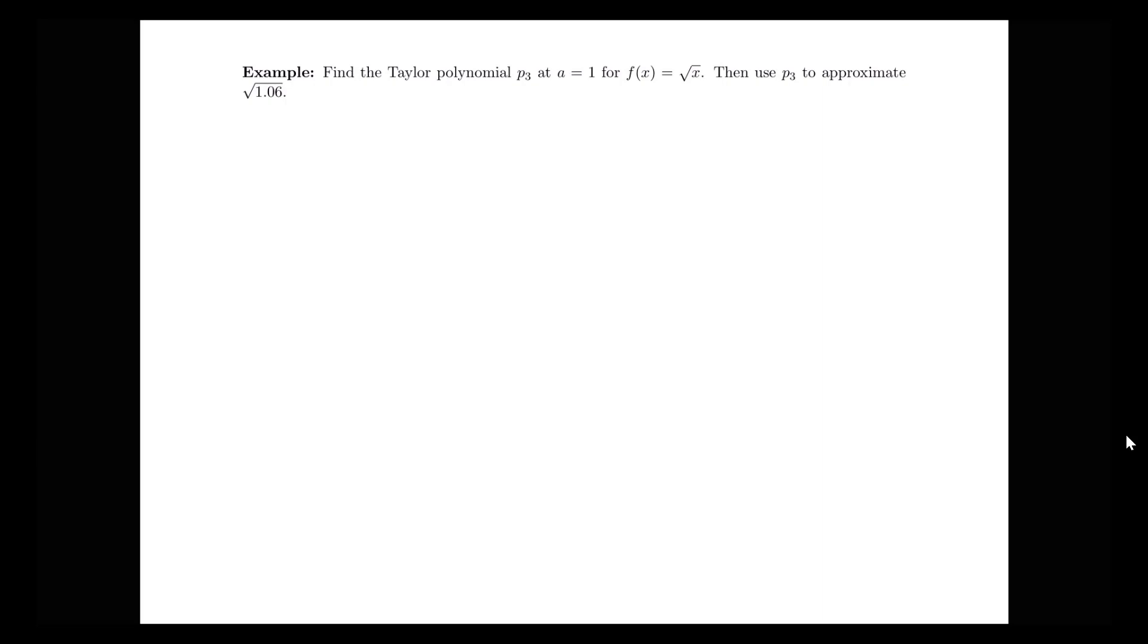In this video we're going to look at how we can find Taylor polynomials using our formula for the nth order Taylor polynomial for a function f centered at a. Here I'm interested in finding the Taylor polynomial P3 at a equals 1 for the function f(x) equals the square root of x, and then we want to use that function to approximate the value of the square root of 1.06.